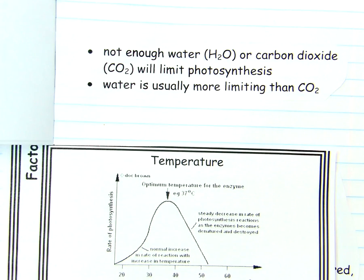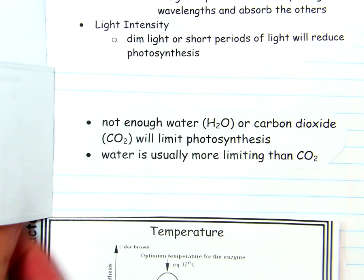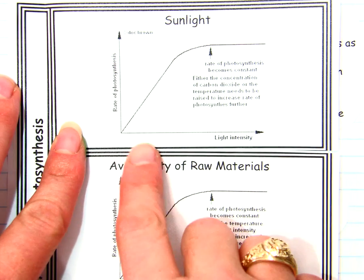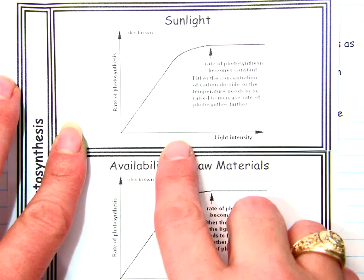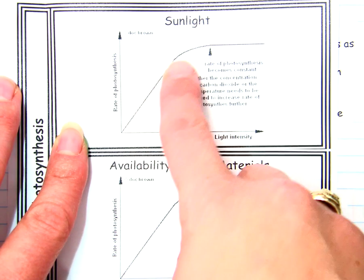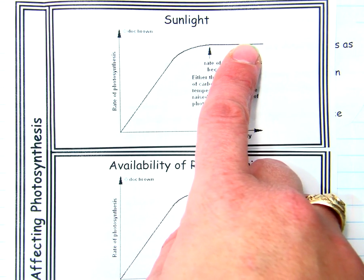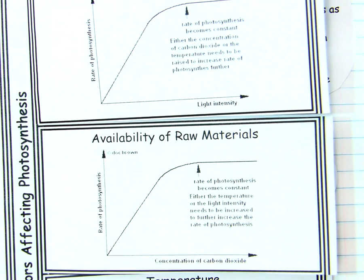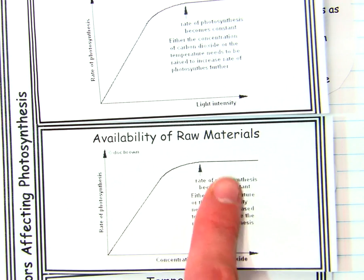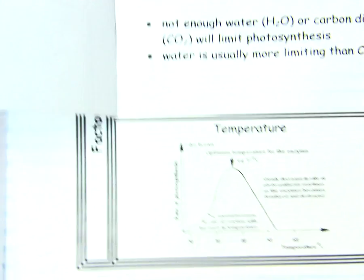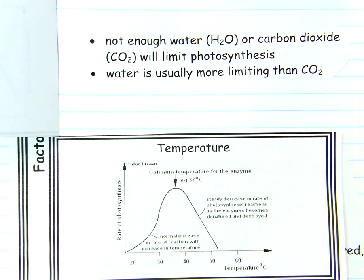Our third and final factor is temperature. Temperature is a little bit different. For sunlight and availability of raw materials, if we give the plant more light or more raw materials, it's going to increase the rate of photosynthesis until it just can't go any faster. Temperature works the same way up to a point, but it's a little bit different.